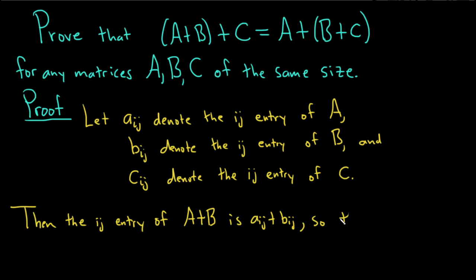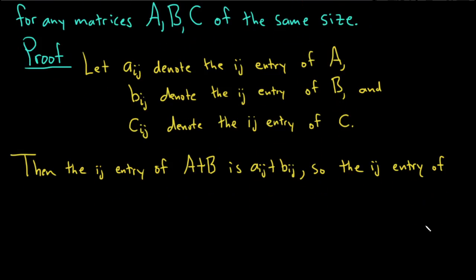So then, the ij entry of (A+B)+C, so (A+B)+C, is then going to be a_ij + b_ij, plus the ij entry of C, so c_ij.